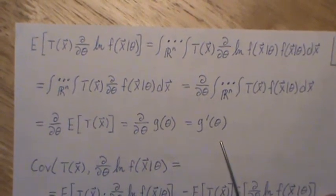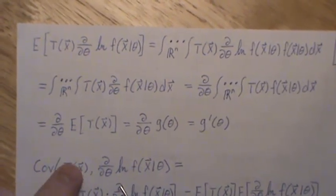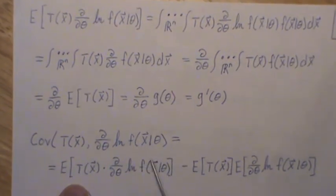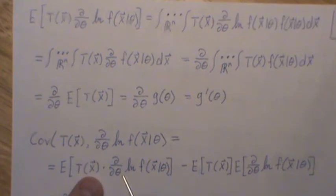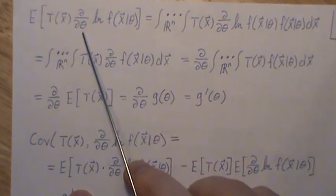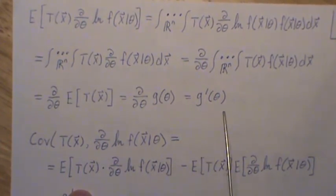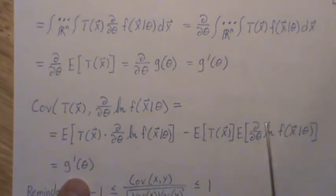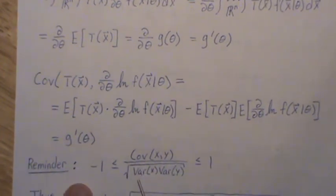Now, let's put all these pieces together. So the covariance between this and this is it's equal to the expected value of the product minus the product of the expected values. Well, this piece we just calculated. This piece we just calculated to be zero. This, of course, it's unbiased, so it's g of theta. So this is zero, and this we just calculated. So the covariance is g prime of theta.